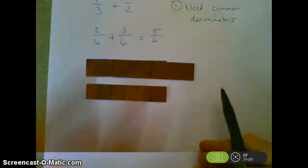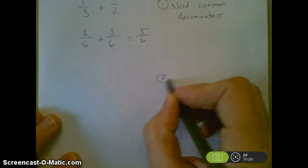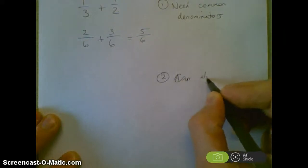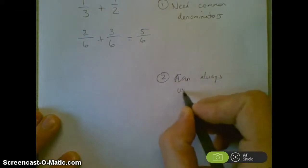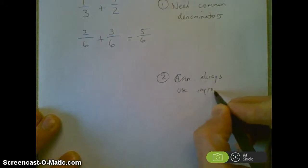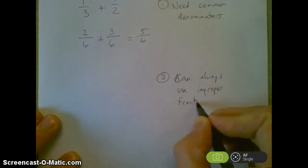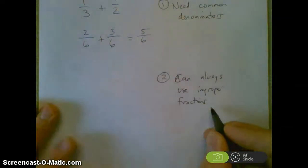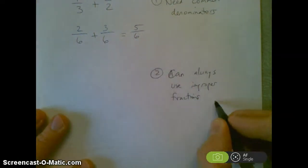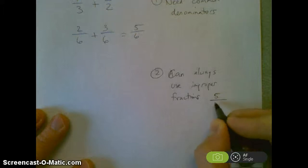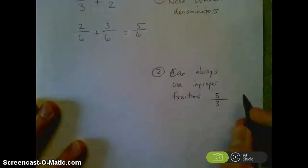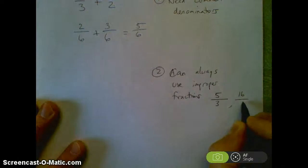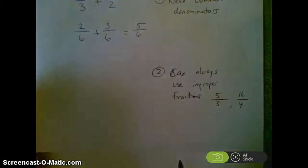So common denominators is the first thing. Second, you can always use improper fractions. Meaning a fraction where the numerator, the top number, is greater than the bottom number. So like 5/3 is an improper fraction or 16/4 or something. That's an improper fraction.